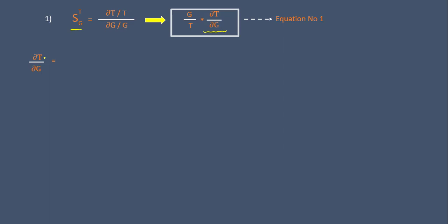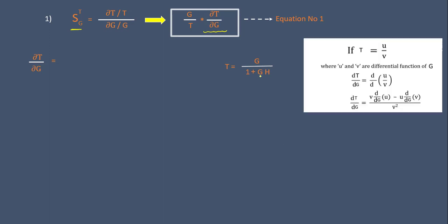We need to differentiate the transfer function T with respect to the forward gain G. We know T equals G upon 1 plus GH. Since T is a rational polynomial, we apply the quotient rule of differentiation — also called the U/V rule — where U is G and V is 1 plus GH.